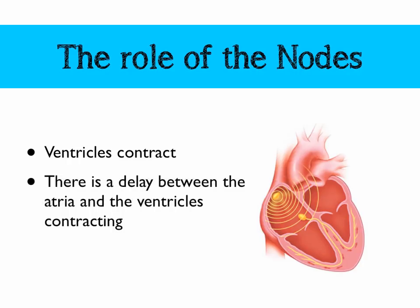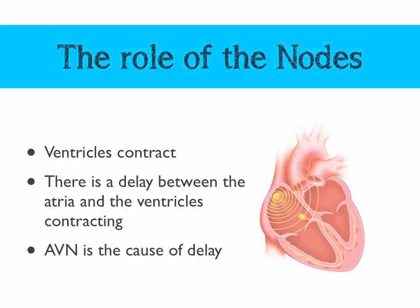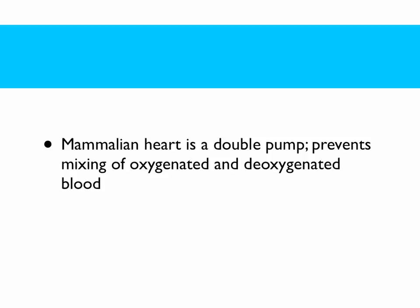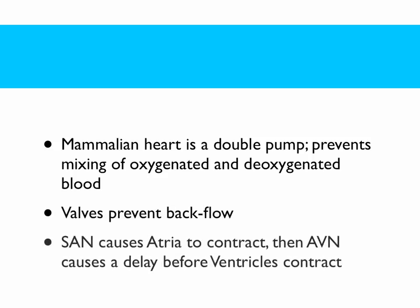There is a slight delay between the atria contracting and the ventricles contracting, and that's caused by the AVN. This allows the atria to fully empty before the ventricles contract, maintaining an efficient system. So to summarise: the mammalian heart is a double pump and prevents the mixing of oxygenated and deoxygenated blood. Valves are present to prevent backflow. The sinoatrial node causes the atria to contract, then the atrioventricular node causes a delay before the ventricles contract. This is a really difficult topic, and it may take a couple of times through this video and your other resources before you fully understand it. Thanks for watching — like, comment, and subscribe.